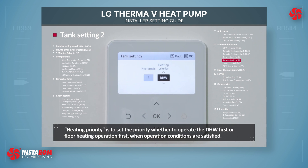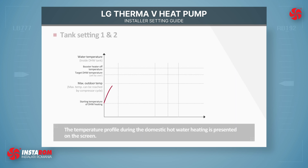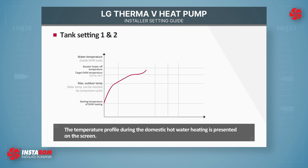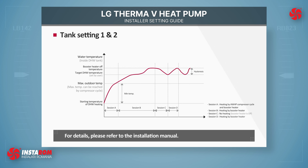Heating priority is to set the priority of whether to operate domestic hot water first or floor heating first when operation conditions are satisfied. The temperature profile during domestic hot water heating is presented on the screen. For details, please refer to the installation manual.